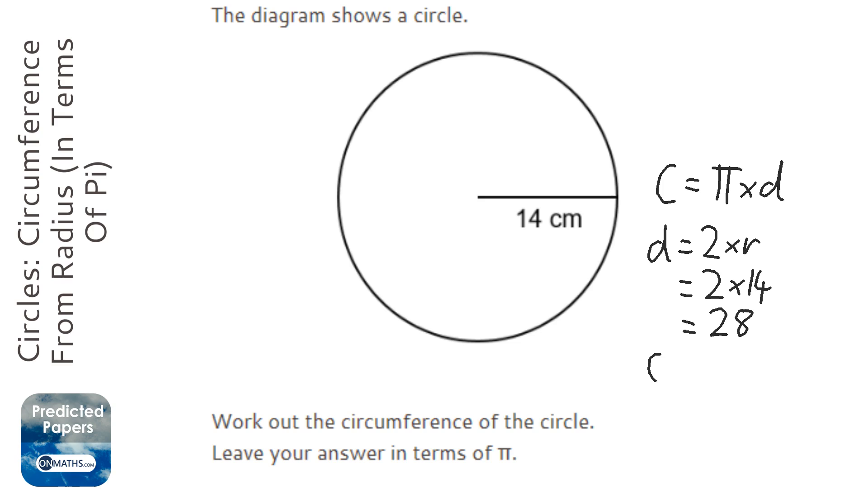So the circumference is going to be pi times 28. Now in terms of pi, that means we don't need a calculator for this.